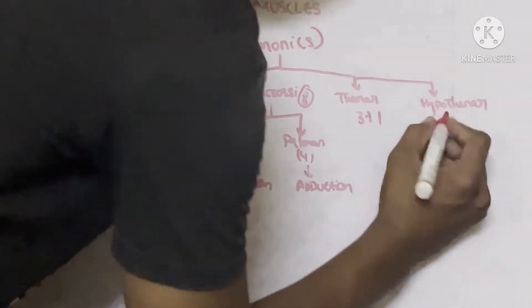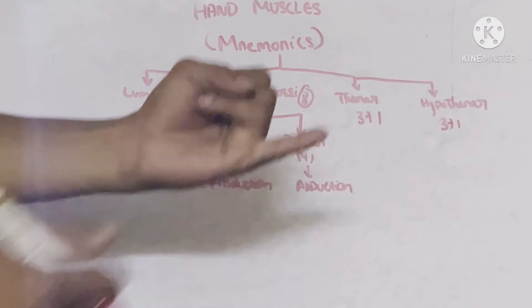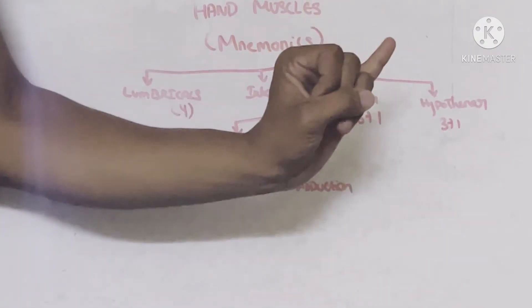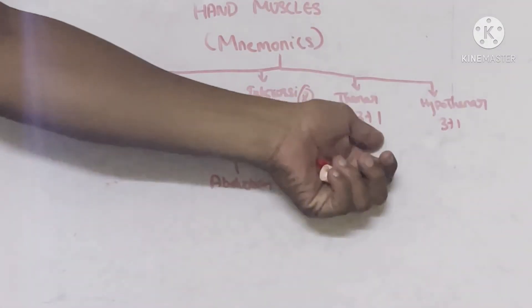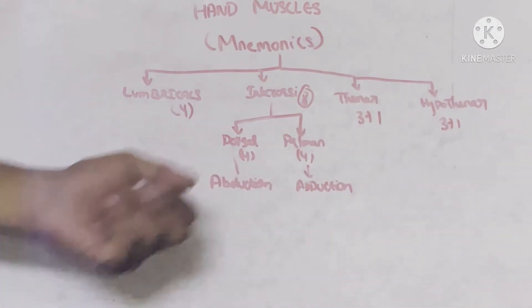If we take hypothenar, these are the same three plus one and these muscles are present below the small finger. That's it. We will study these muscles deeply while studying about mnemonics, so it will be more easy for you.